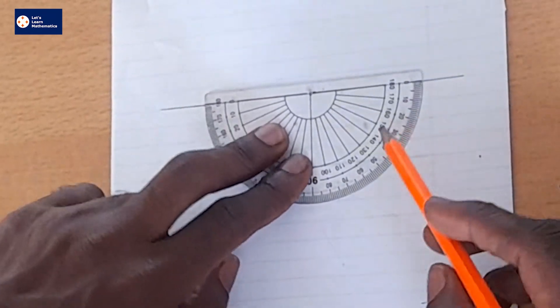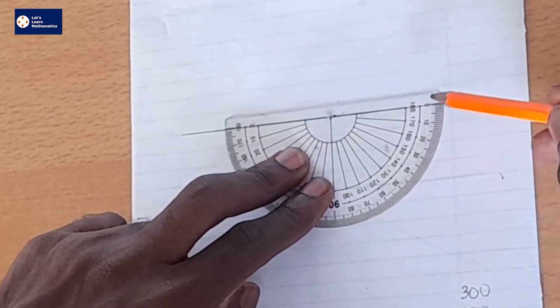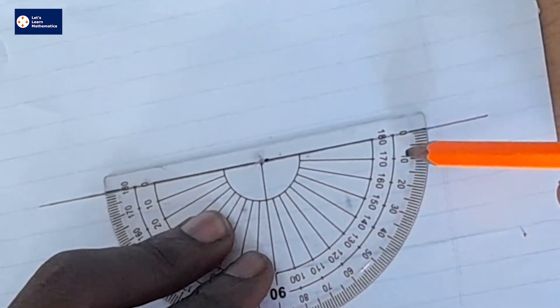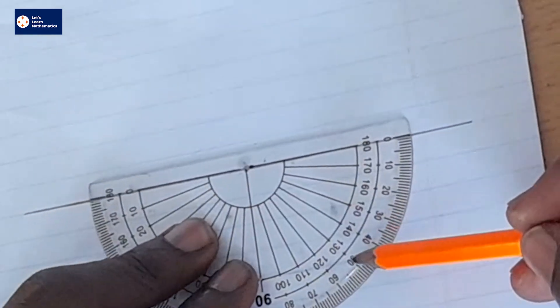So let me see. We can do it from here, from the right-hand side. So 0, 10, 20, 30, 40, 50, 60.